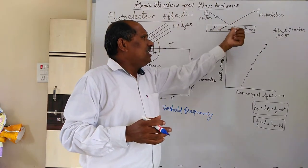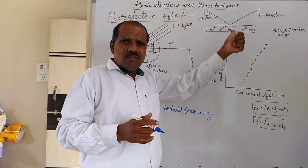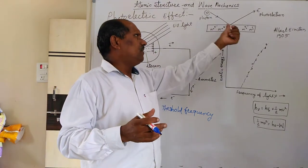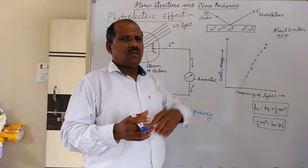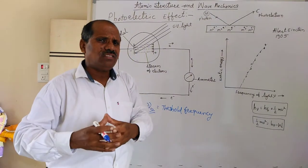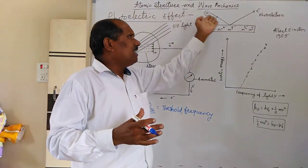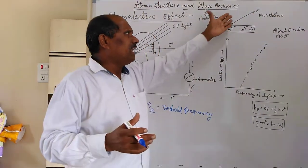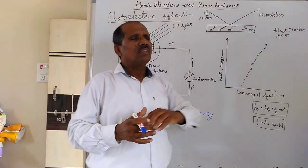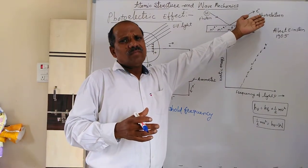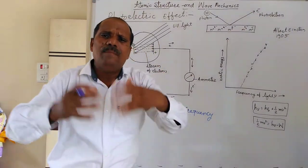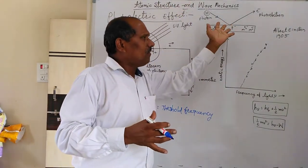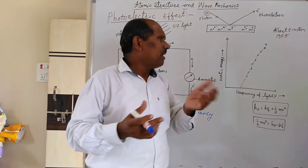Initially, the photon energy must overcome the attractive forces present between the metallic ion and the electron. After overcoming those attractive forces, the electron is knocked out or ejected, and that ejected electron is called a photoelectron. The number of photoelectrons will be greater whenever the intensity is more — that is, whenever the number of incident photons is more, the number of ejected electrons will be more.